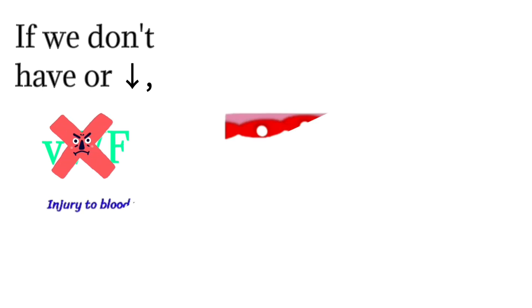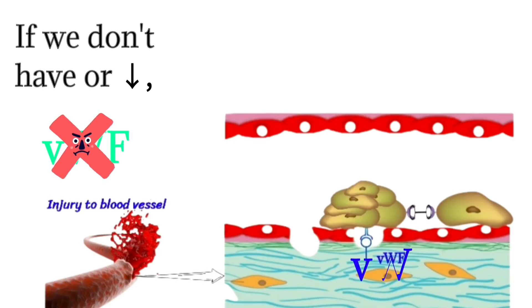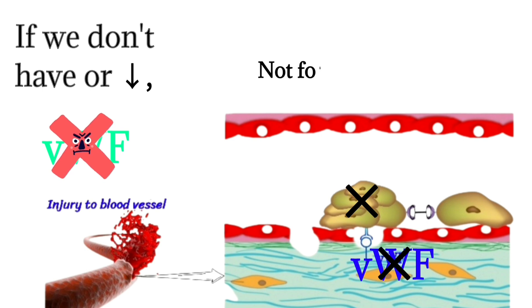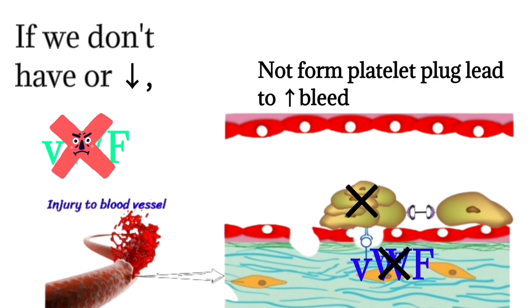If there is a deficiency of von Willebrand factor, the platelet plug does not form properly, leading to increased bleeding time.